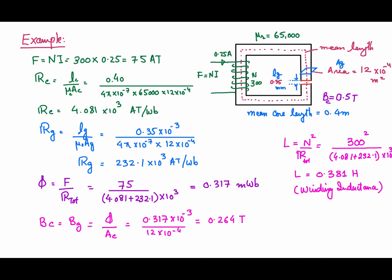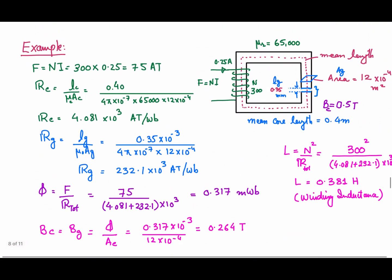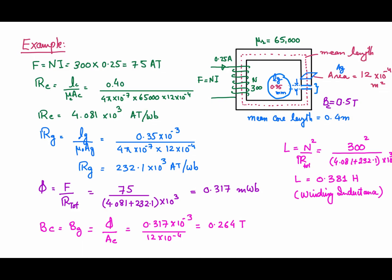The next example also involves inductance calculation but with changed dimensions. The air gap is now 0.35 mm (versus 0.25 mm before), cross-sectional area is 12×10⁻⁴ m², relative permeability is 65,000, current is 0.25 A, and the winding has 300 turns. First, the MMF = N×I = 300 × 0.25 = 75 ampere-turns.